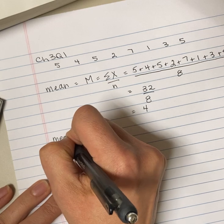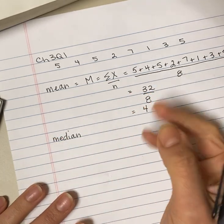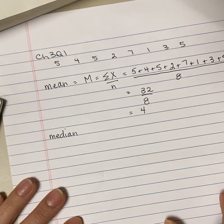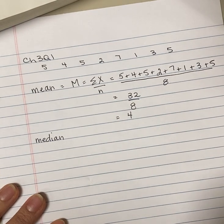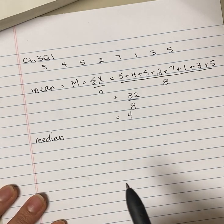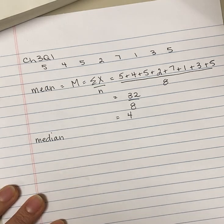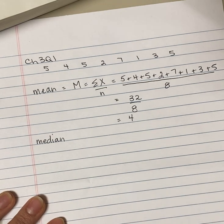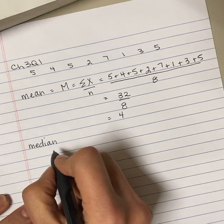The median is the middle score. The first thing that we need to do once we determine that we have an even number of scores and that it's a discrete variable, we need to arrange those scores in order from smallest to largest, or largest to smallest. But we'll do smallest to largest.